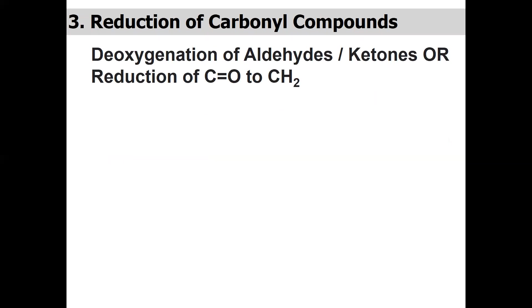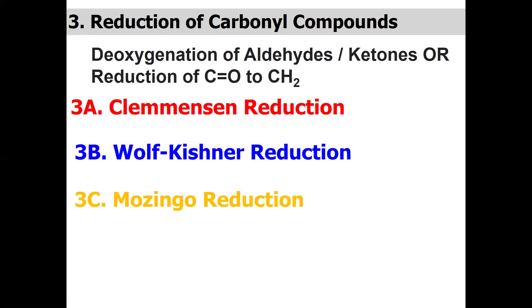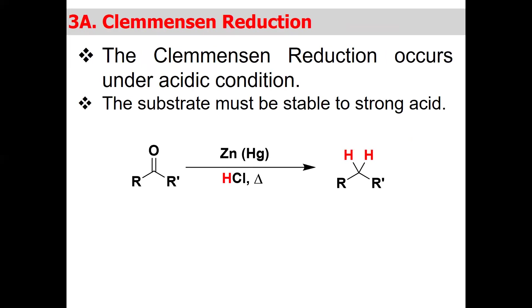The next reaction by which we can synthesize alkanes is the reduction of carbonyl compounds, also called deoxygenation of aldehydes or ketones — converting the carbonyl C=O to CH2. There are three methods for this. We have different types of reagents available for each method.